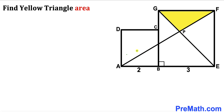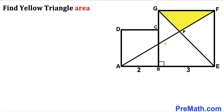Welcome to pre-math. In this video we have got these two squares: square ABCD and square BEFG, put together as shown in this diagram, such that the side length of the smaller square is two units whereas the side length of the larger square is three units. Moreover, we have diagonals AF and EG, which intersect each other at point P, giving us the yellow shaded triangle FGP. Our task is to calculate the area of this yellow shaded triangle.